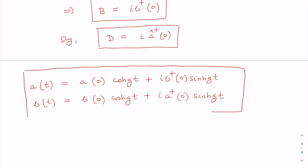These two equations lead us to a phenomenon called two-mode squeezing. As the name suggests, two-mode squeezing does not mean that individual modes are getting squeezed; rather, their relative or normal coordinates are getting squeezed or anti-squeezed. Two-mode squeezing is a relatively difficult concept.